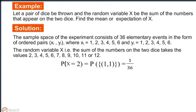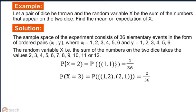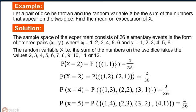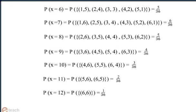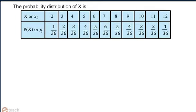Probability of x equal to 2 is equal to the probability of (1,1), that is equal to 1 by 36. Similarly, probability of x equal to 3 contains two events, so its probability is 2 by 36. We go on calculating the probabilities of all the cases and hence get the probability distribution of x as shown.